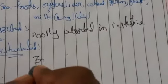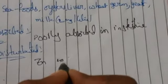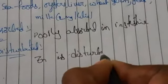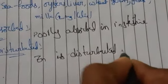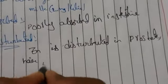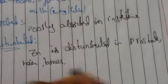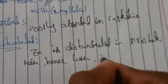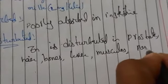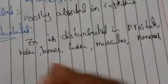Zinc is distributed in the prostate glands, hair, bones, liver, muscles, pancreas, spleen, and blood.